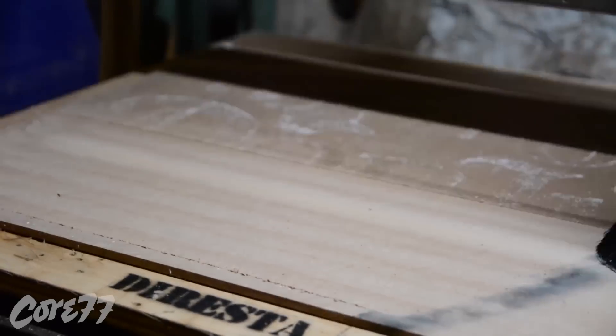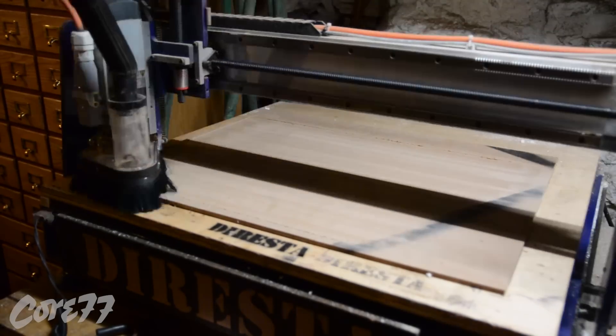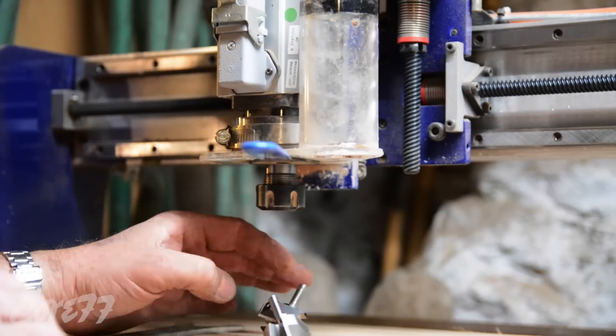I'm surfacing the top of my table. I use a sacrificial piece of MDF, I hot glue it in place, and then I flatten it out with a one and a half inch bit there.